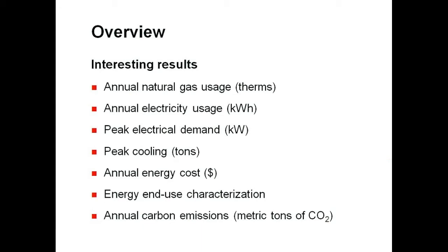What are some of the interesting results that you can expect from the calculator? The main energy results are natural gas and electricity usage on an annual basis, as well as the building's peak electrical and cooling demands. As mentioned previously, the calculator predicts the annual energy costs, as well as an energy end-use breakdown — such as how much of the total energy use goes to heating, cooling, lighting, plug loads, and fans.